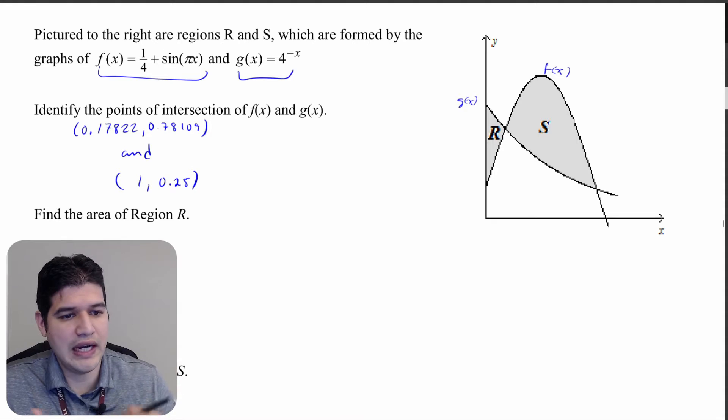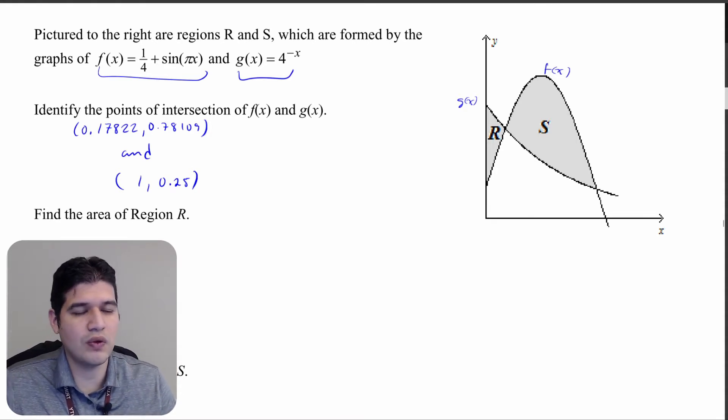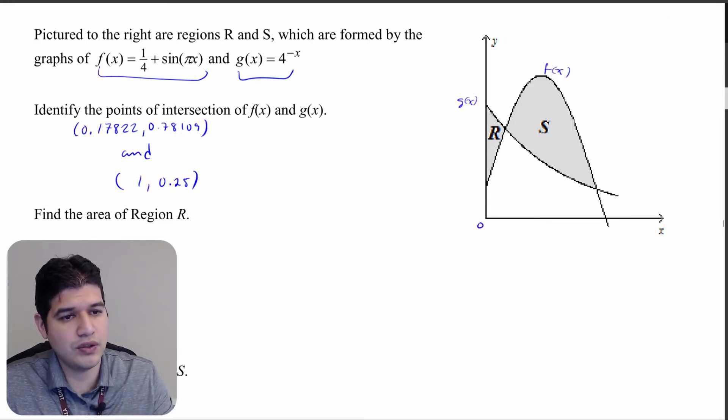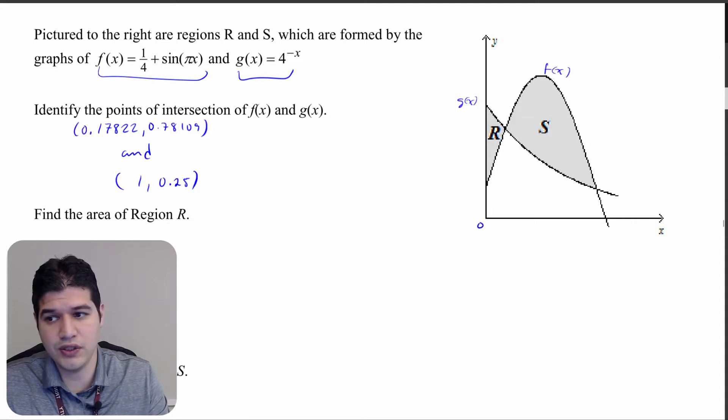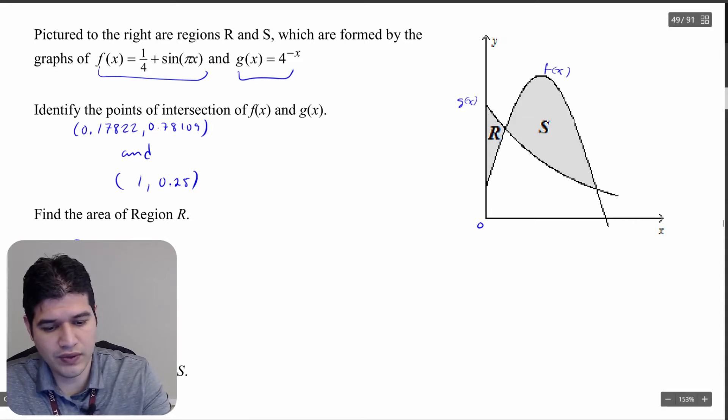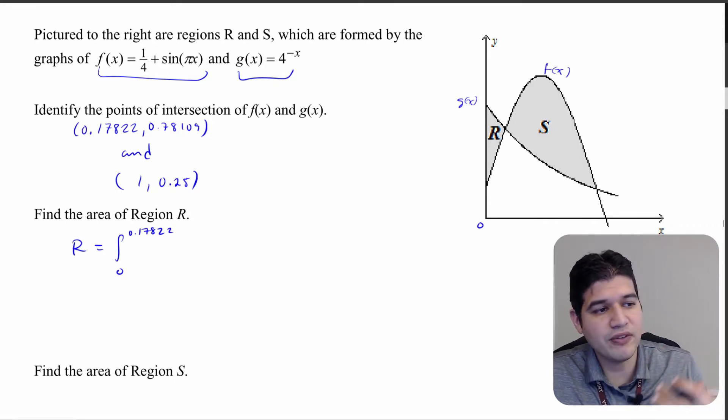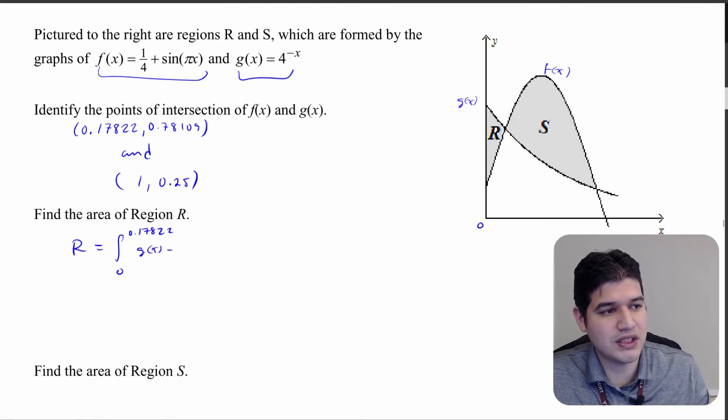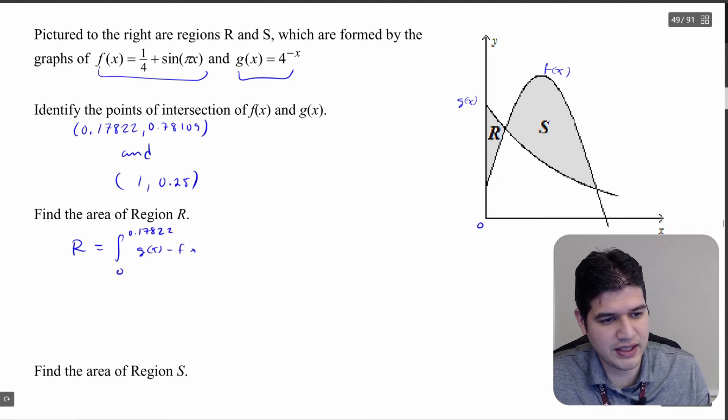So the first thing we want to do is find the area of region R. We have those bounds of integration. We are starting here at zero and we're going to 0.17822. So R is going to be equal to the integral from 0 to 0.17822. We're doing the upper function minus the lower function here. So the upper function is going to be g of x in this case. I want to write out g of x minus the lower function which is going to be f of x, so minus f of x dx.